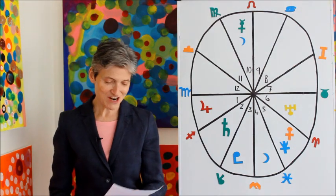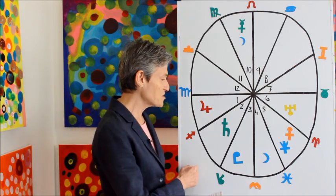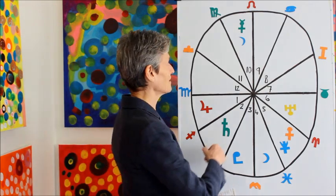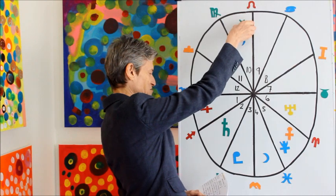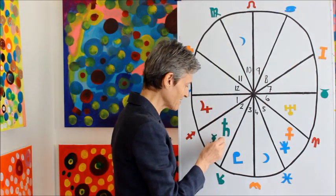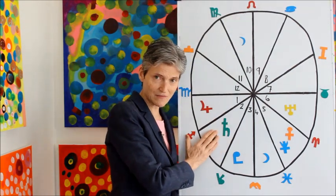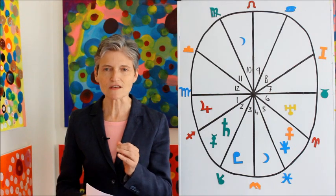And the final Mercury retrograde, from December 3rd to 22nd, is back here in this second house of money. So the year begins with an evaluation of money and it closes with a re-evaluation of finance, money, valuing yourself, your self-confidence, your self-worth.